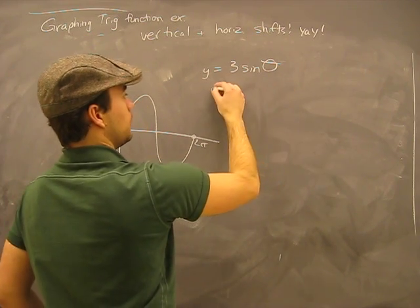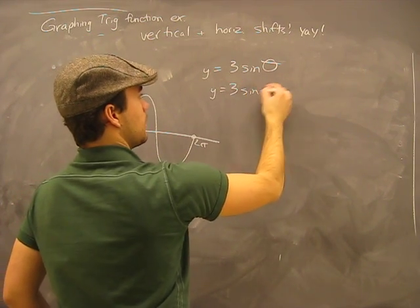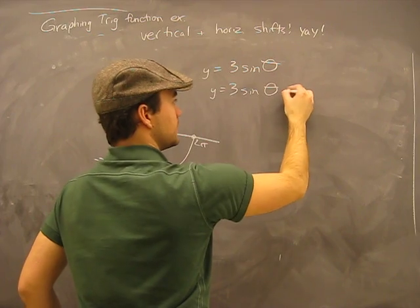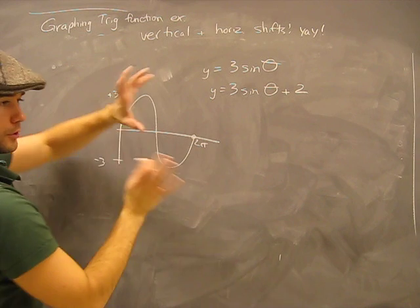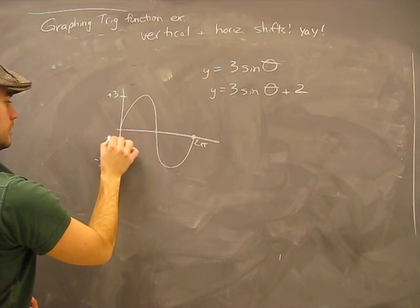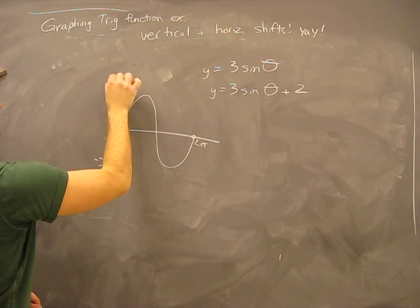If we have this, Y equals 3 sine theta plus 2, we pop this guy up two positions. There's 1 plus 5.